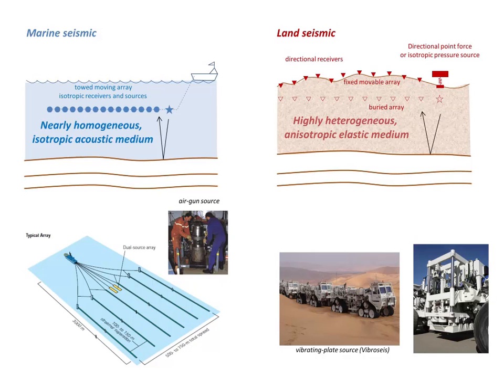Another reason for picking land seismic as the theme for Phase 2 is that modeling land seismic data acquisition in a realistic way has its own set of challenges, often very different from those of marine seismic acquisition. The main difference between marine and land seismic lies in the medium hosting the seismic sources and receivers. In marine seismic, sources and receivers are moving continuously through water — a medium that supports only compressional waves. Seawater is isotropic and for all practical purposes homogeneous at the frequencies and wavelengths used in seismic exploration.